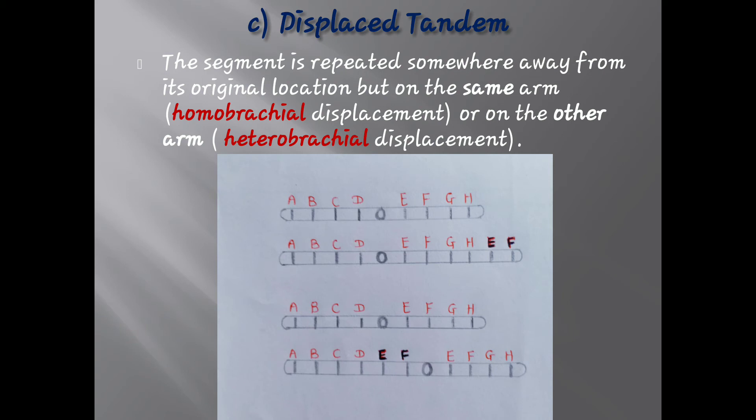In the diagram, segment E, F is repeating but is not at its original location — it is away from it but on the same arm, which is called homobrachial. In the other diagram, the duplicated E, F segment is present away from its original position but on the other arm, which is called heterobrachial displacement.